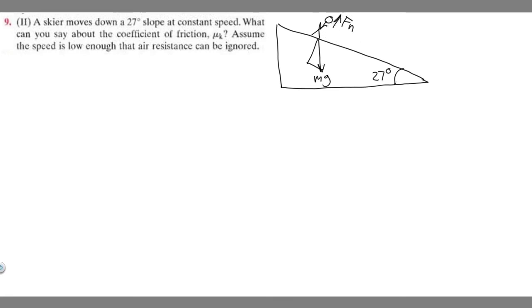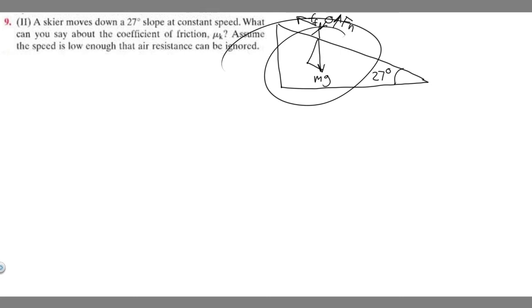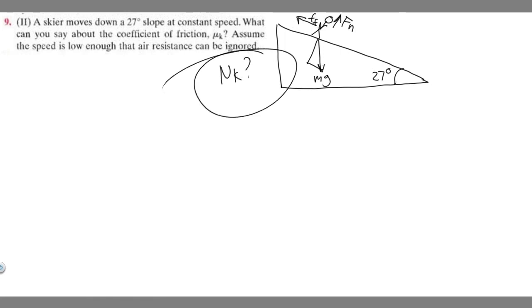We also have the force of friction going in this direction. I like to think about friction as a force that goes in the opposite direction because it slows you down. So this right here is going to be our drawing. Notice what they're asking us for is mu sub k, so just keep that in mind when we're solving this.